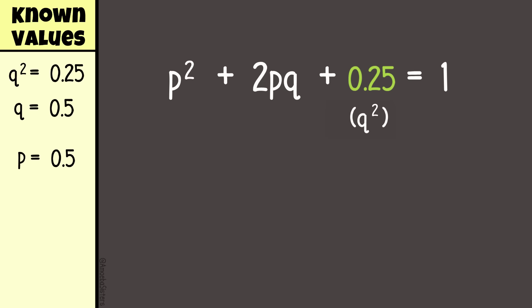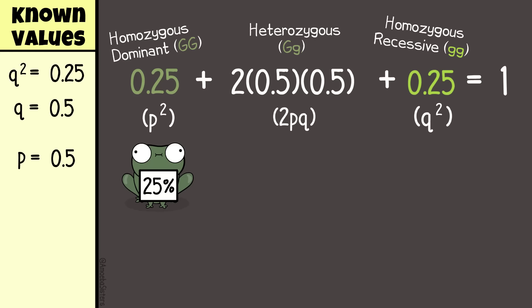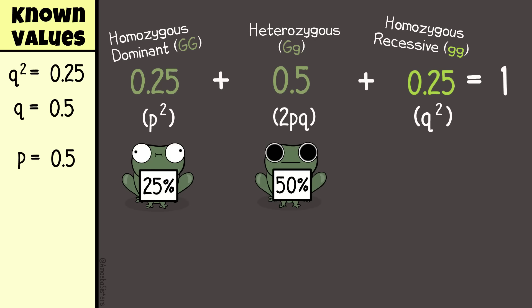Now I have p and I have q and I can take care of everything else. I can use the second equation to determine the homozygous dominant frequency, the heterozygous frequency, and I already knew the homozygous recessive frequency from the beginning. Plugging those in, p² equals 0.25 for the genotype frequency big G big G. 2pq equals 0.5 for the genotype frequency big G little g. q² equals 0.25 for the genotype frequency little g little g.